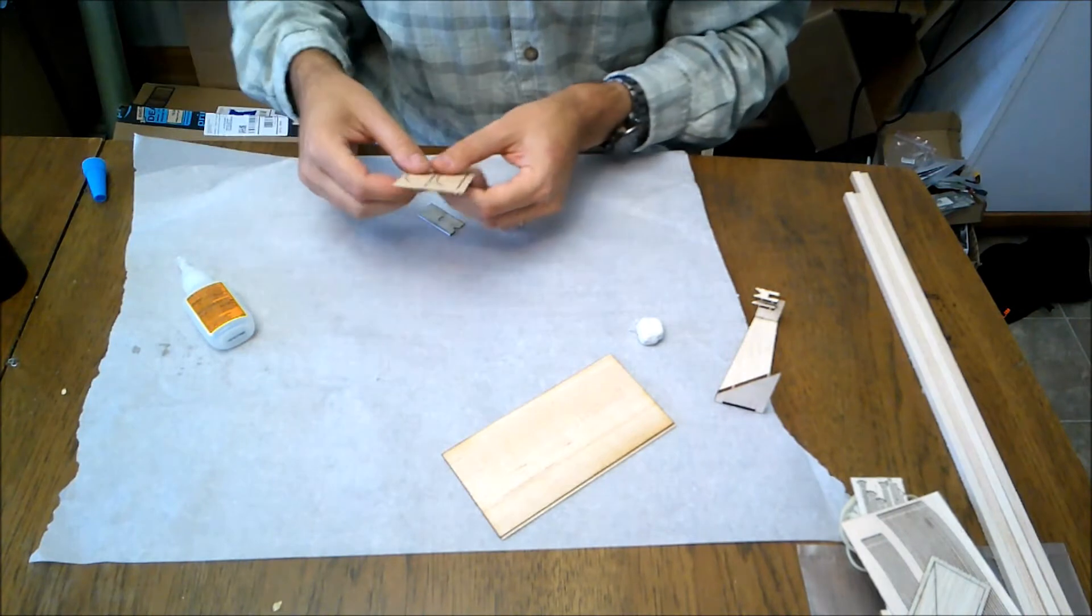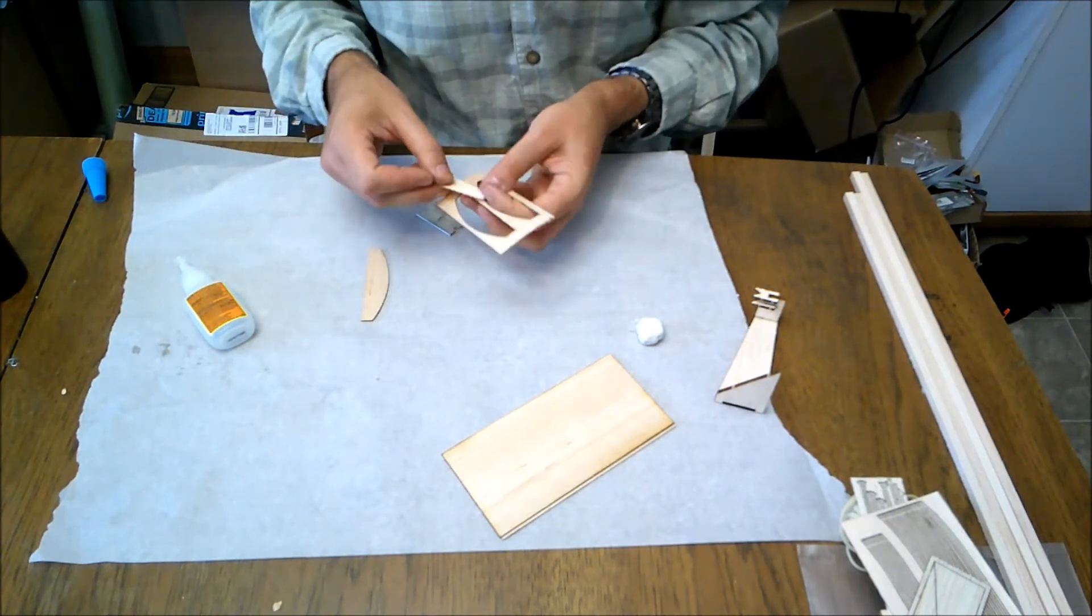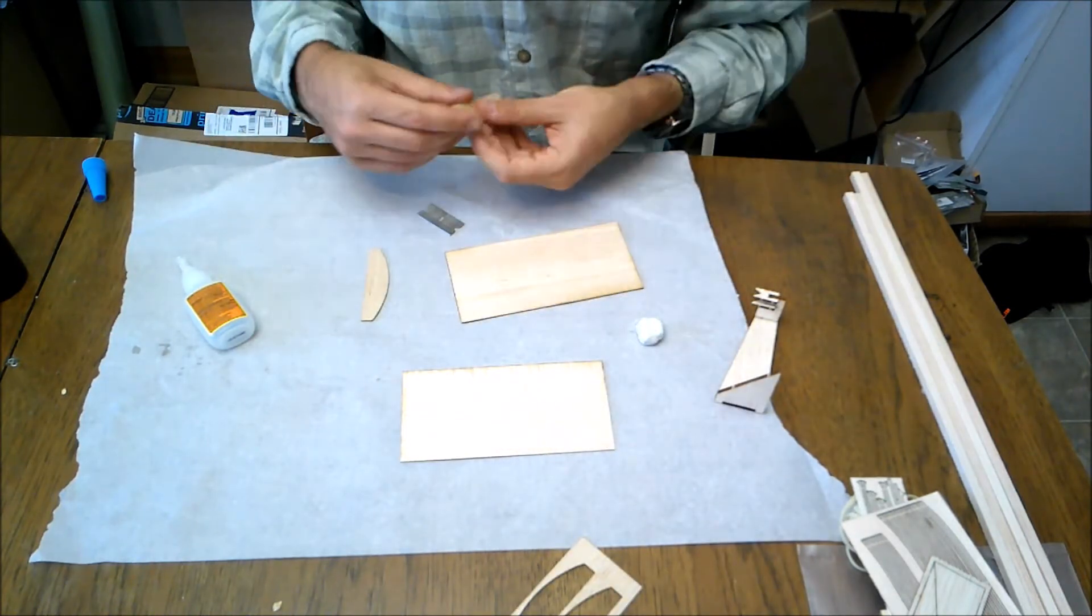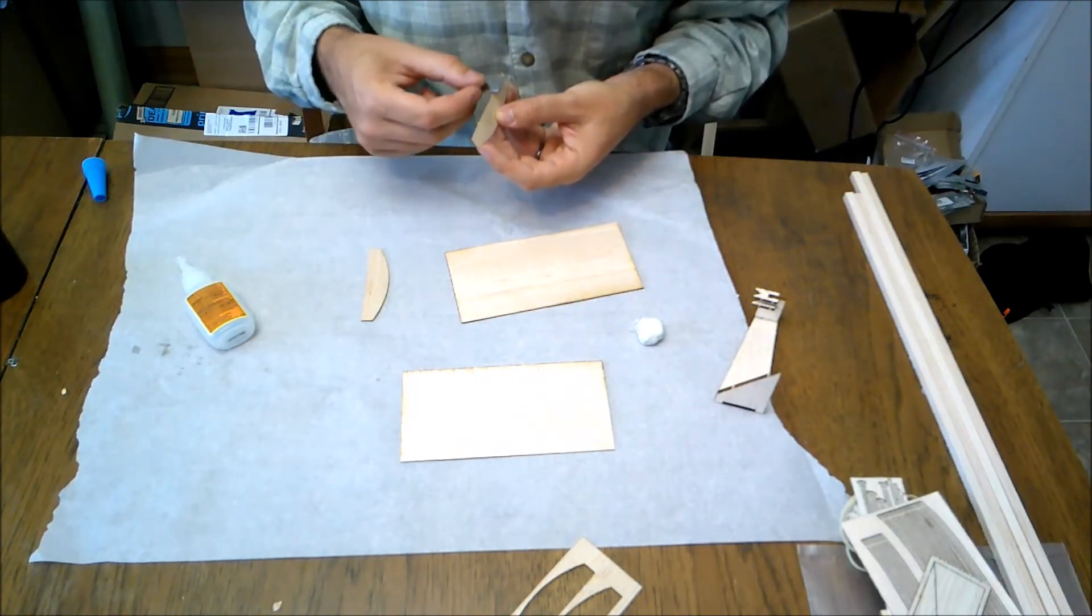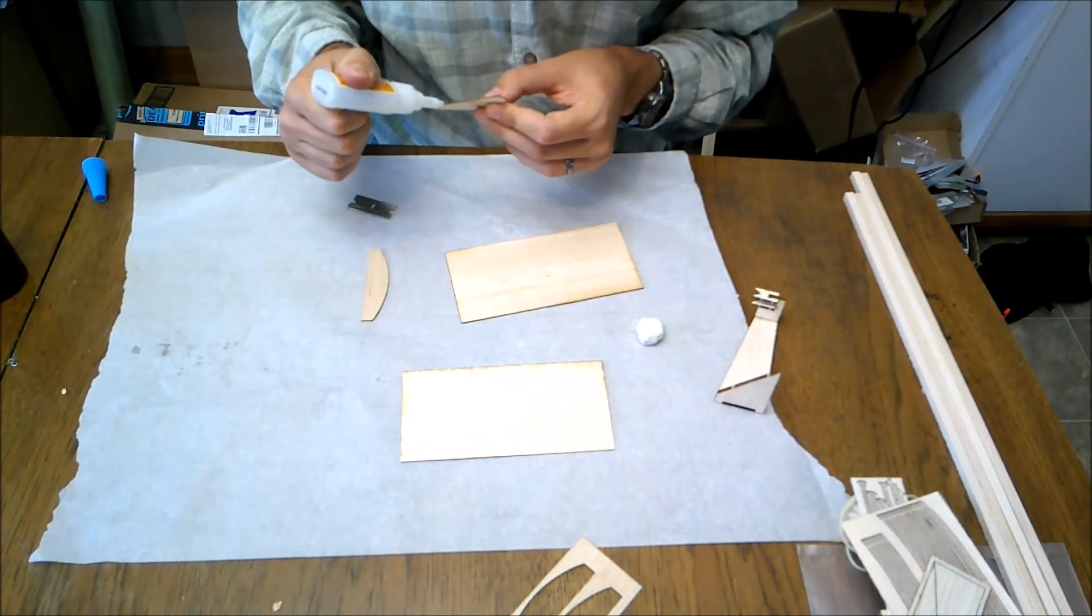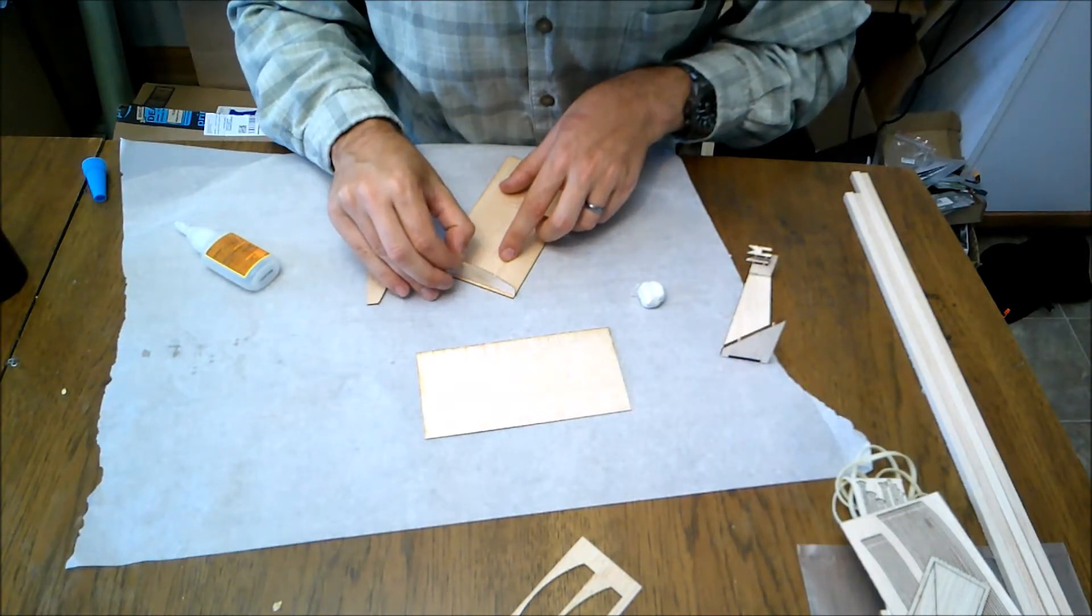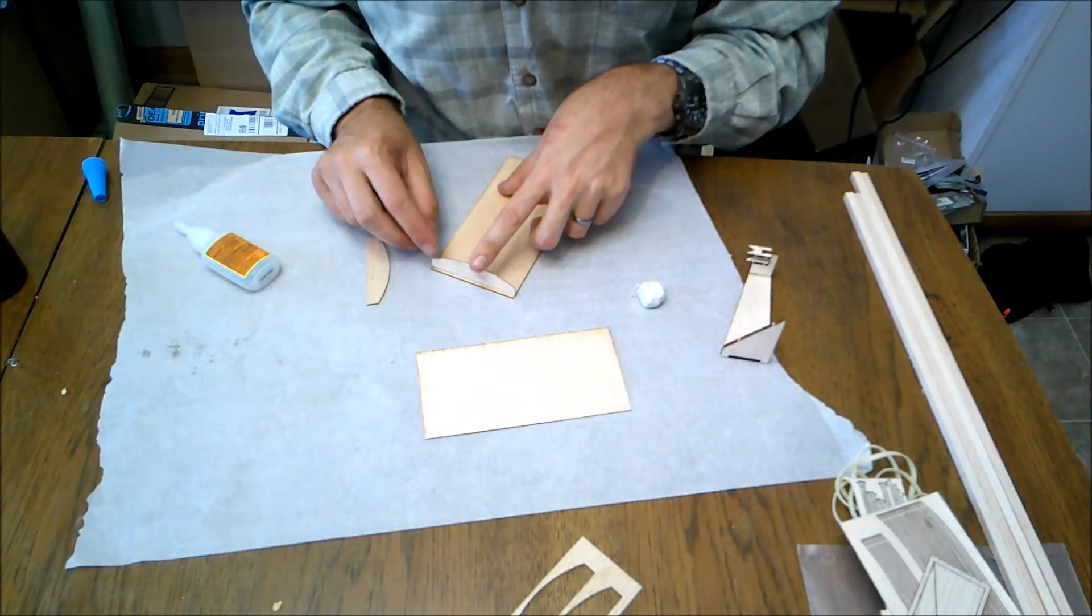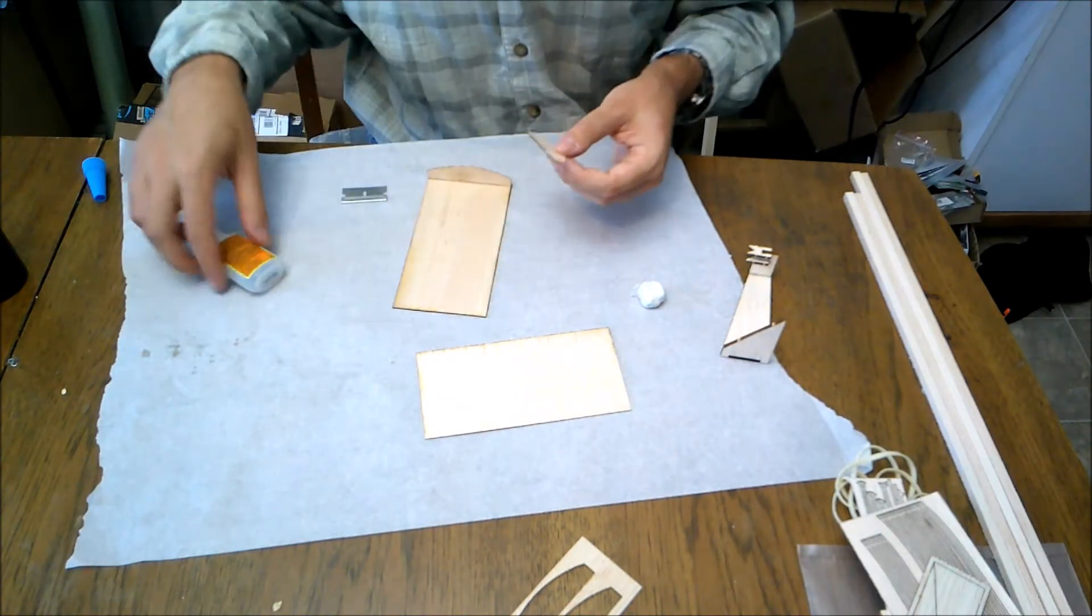Next we'll make the propeller forming block. This is even easier. So these pieces, what we're going to do is we're going to glue them just flat down like that. Now notice I'm not gluing it all the way at the edge. You can if you want to. I just find it makes it a little easier to assemble this forming block if you don't.